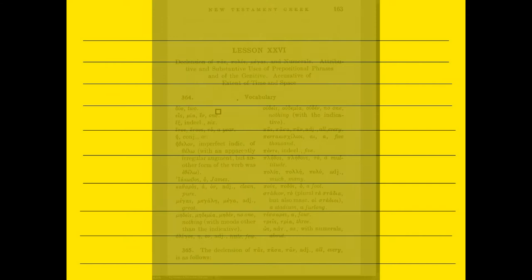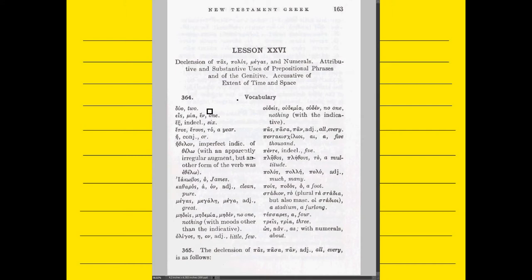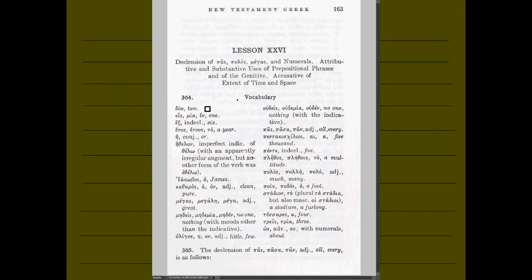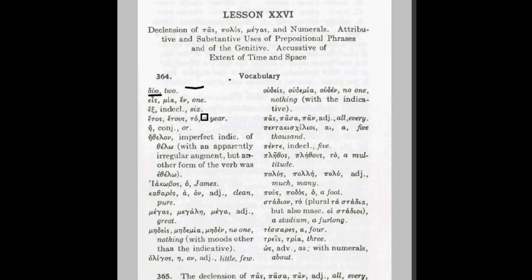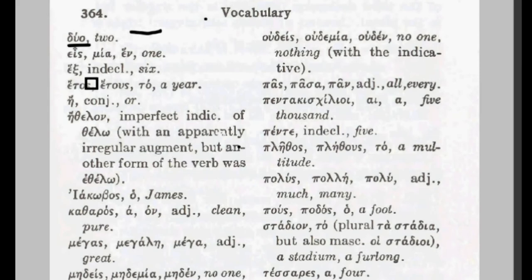As we typically do, we're going to start by looking at the vocabulary list, then look at some of the paradigms found in this chapter, and then finish up by considering the first three exercises. Here's the page from Machen's text that has to do with the vocabulary words. You're going to notice numbers are introduced. For example, here we have the number duo — and of course in English we commonly use that same expression, duo, to mean two.